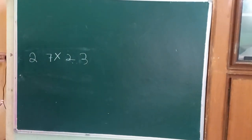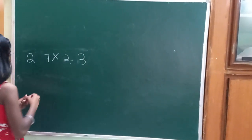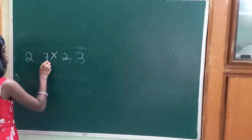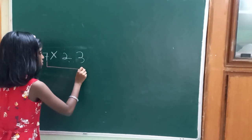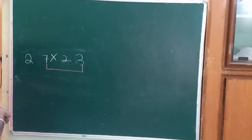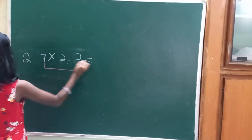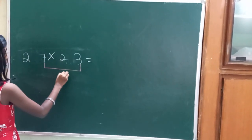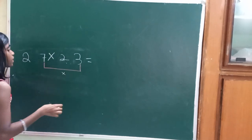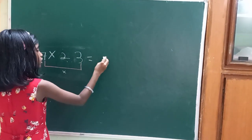Now for the first thing, you have to multiply these two ones digits. So seven multiplied by three equals twenty-one.